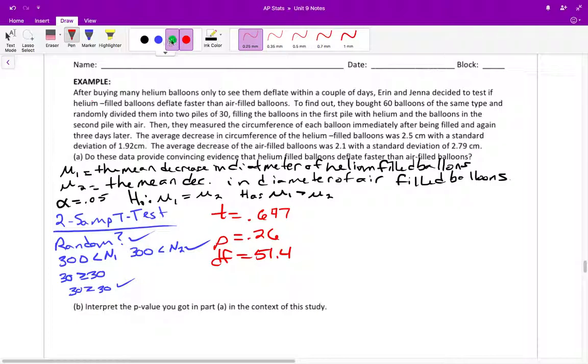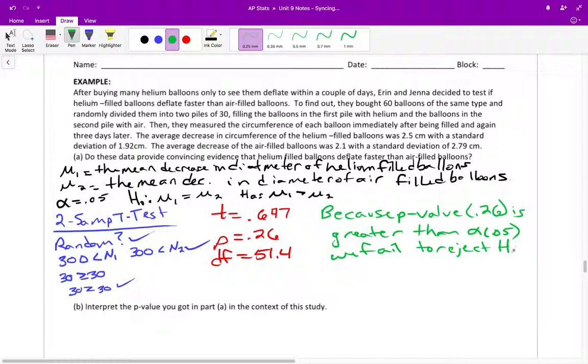Now, for our conclusion, we would say because our p-value was 0.26, so in other words, because p was 0.26, which is greater than our significance level of 0.05, we failed to reject our null hypothesis. In other words, there was not convincing evidence that helium-filled balloons deflated faster.